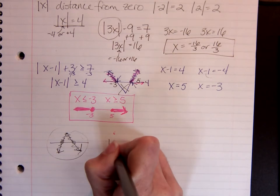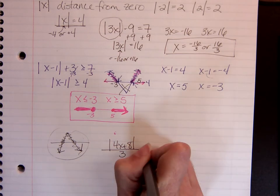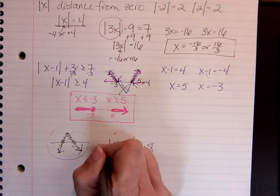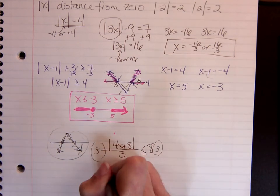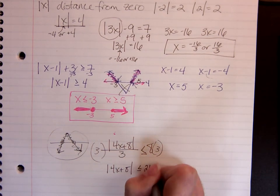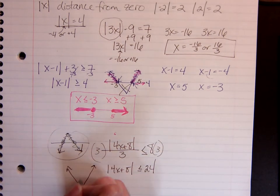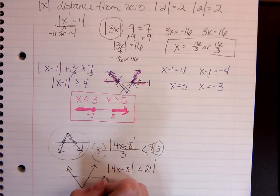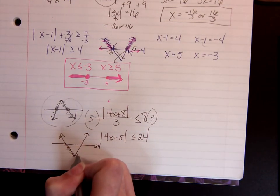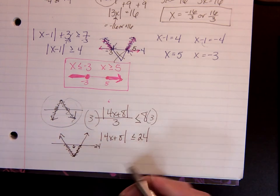Absolute value of 4x plus 8, all divided by 3 is less than or equal to 8. I'm going to multiply by 3. Absolute value of 4x plus 8 is less than or equal to 24. So on my graph, I'm going to look at where 24 intersects. And now that I know we want less than, I'm interested in this part that's under the line.